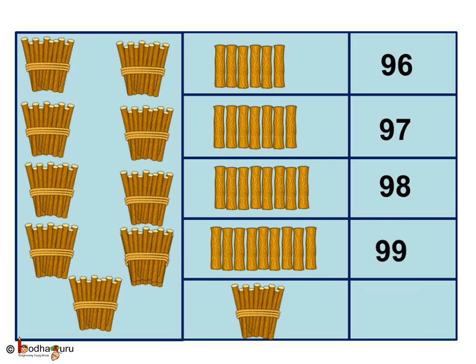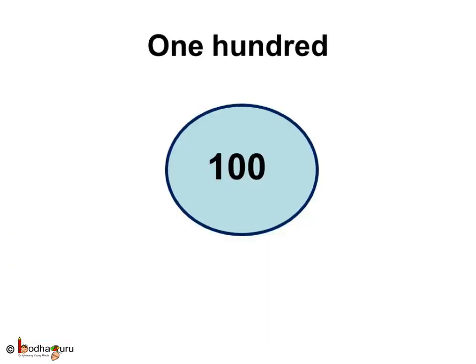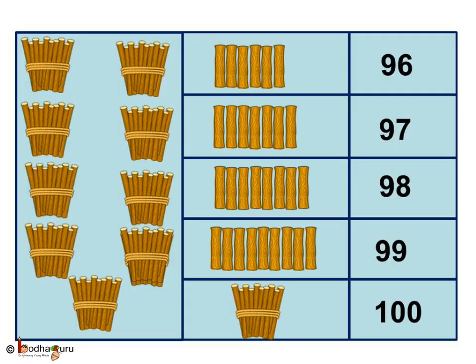Now, what comes after 99? It is 100. See, it is written as 1-0-0. It has 3 digits. So for number 100 and above, we have to use at least 3 digits. So after 99 comes 100, which is written as 1-0-0.